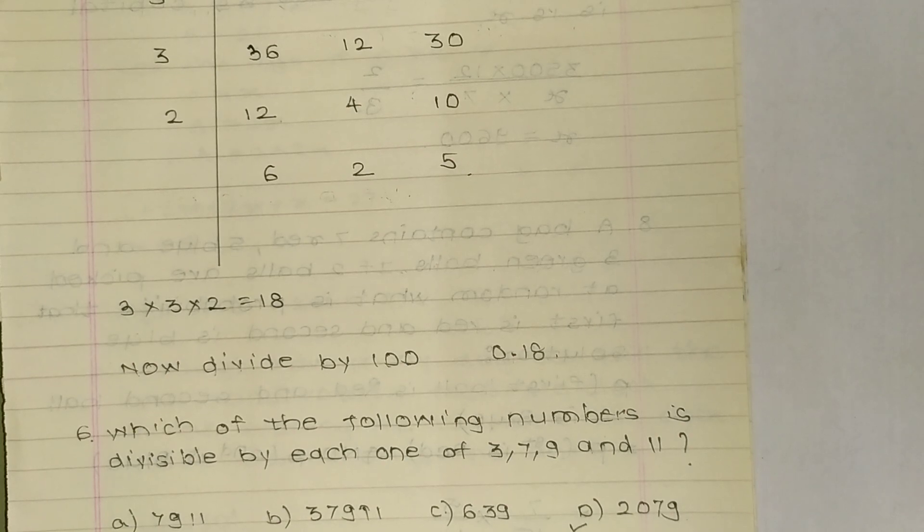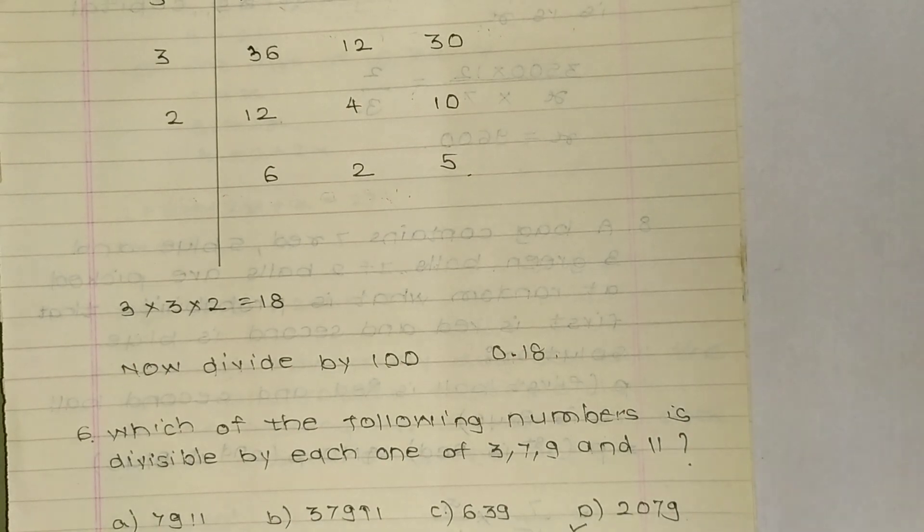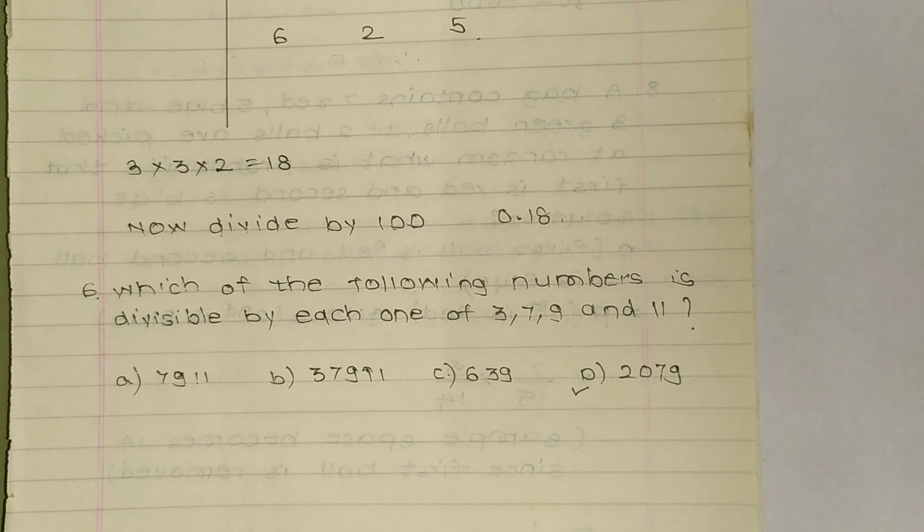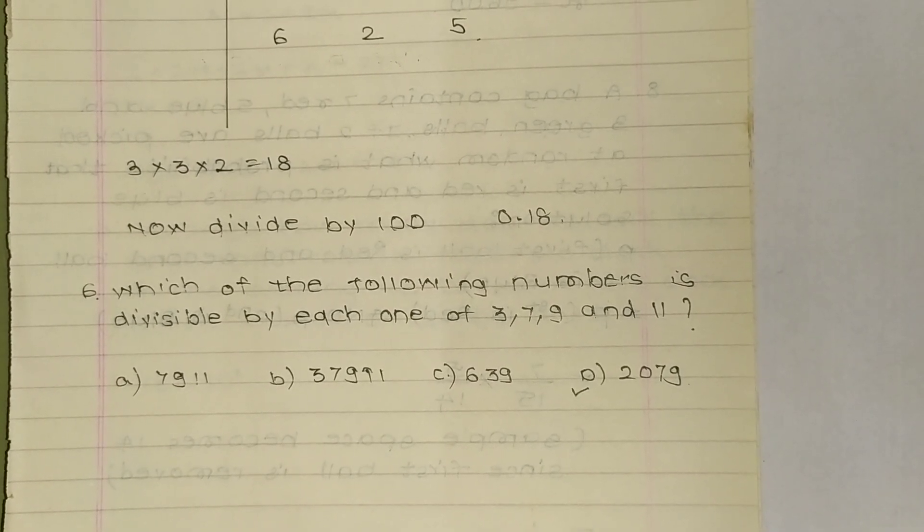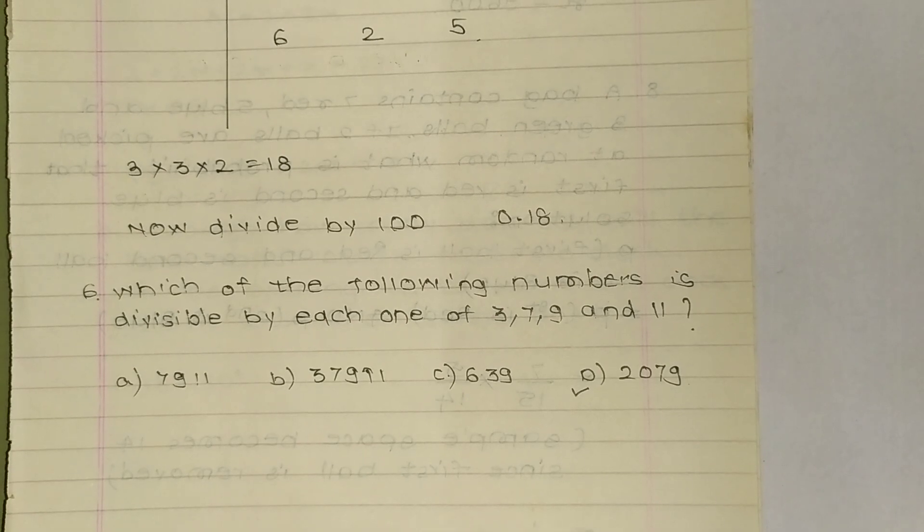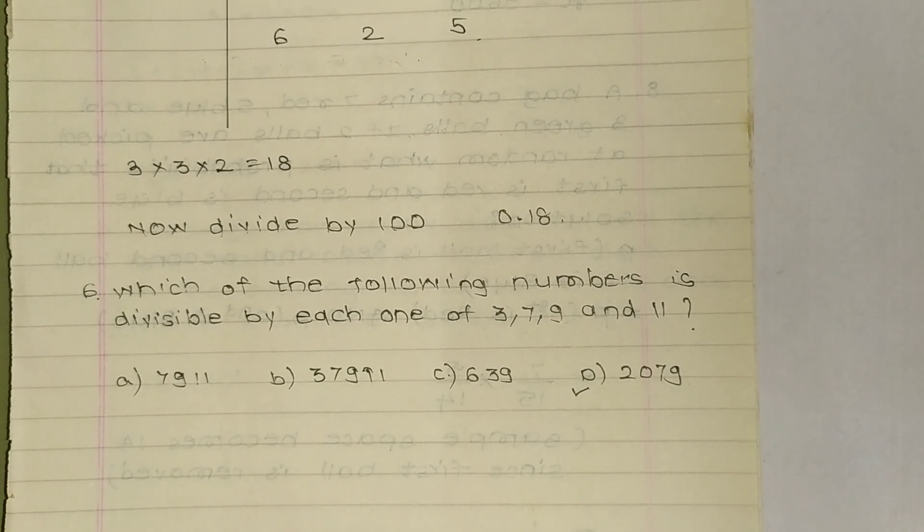Question 6: Which of the following numbers is divisible by each of 3, 7, 9, and 11? Here we can use calculator also to find that the number is 2079.